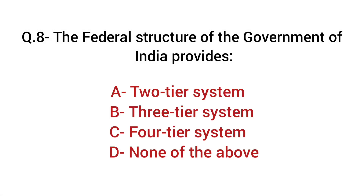Question number 8: The federal structure of the government of India provides — Option A: Two-tier system. B: Three-tier system. C: Four-tier system. D: None of the above.